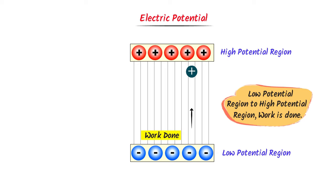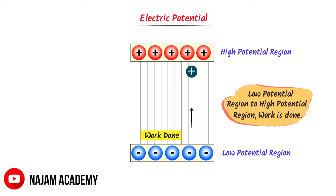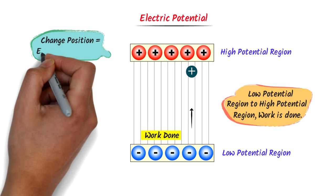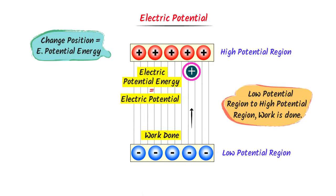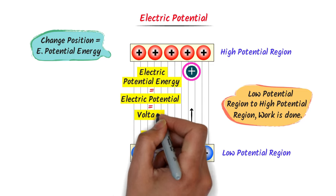After doing some work on the test charge, it will move from low potential region to high potential region. The position of the test charge is changed in the electric field. According to the second fact, when the position of a test charge is changed against the electric field, electric potential energy is stored in the charge. So here at the high potential region, this test charge possesses electric potential energy. This electric potential energy of the test charge is called electric potential or voltage.